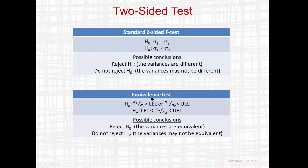In an equivalence test, the null hypothesis is that the ratio of the two standard deviations is either less than a lower equivalence limit or greater than an upper equivalence limit. The alternative hypothesis is that the ratio falls between those two limits. Possible conclusions are either to reject H0 and conclude that the variances are equivalent, or not reject H0, in which case the variances may not be equivalent.